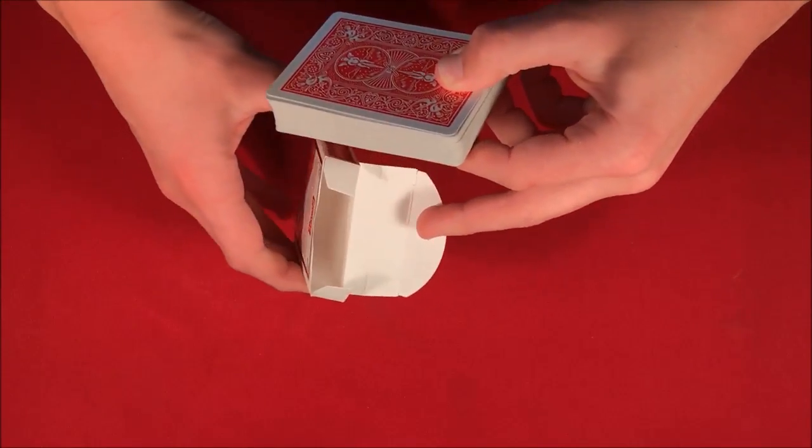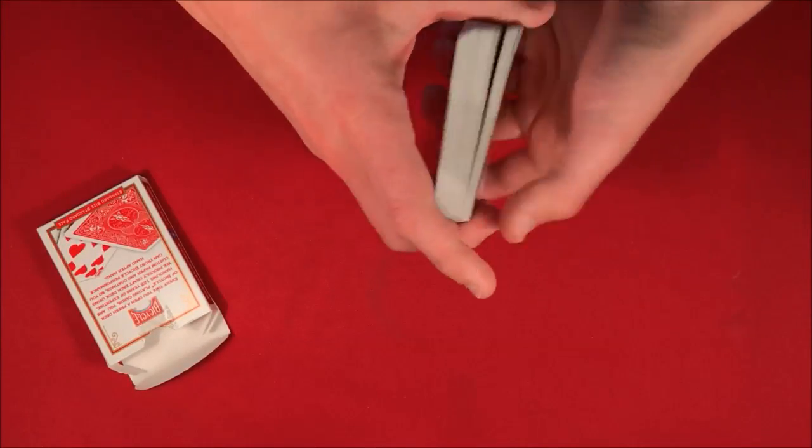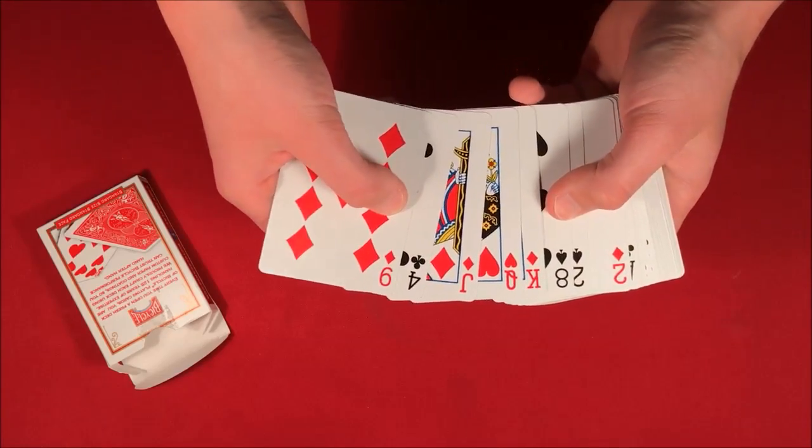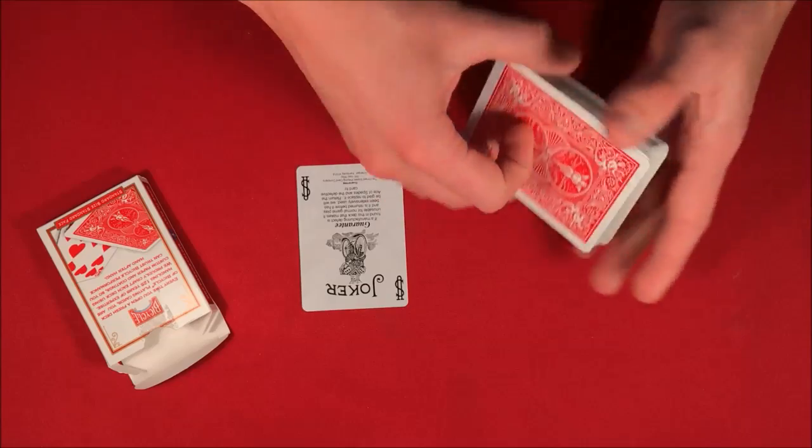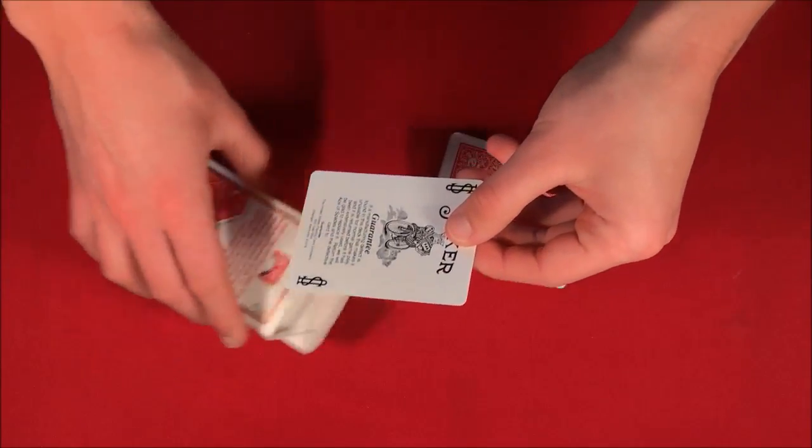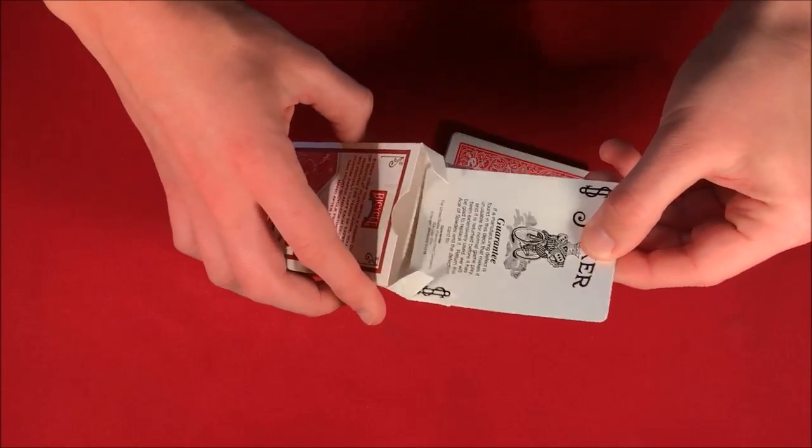So let's say we're going to start off. As you can see there's nothing inside the box. Let's say we're going to put a random card. Maybe in this case, let's say we put the joker inside of the card box. So let's go ahead, put the joker into the box.